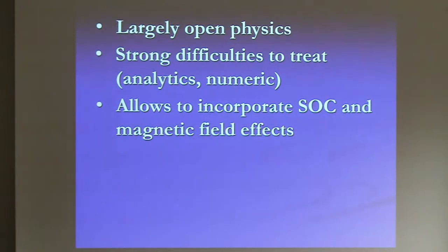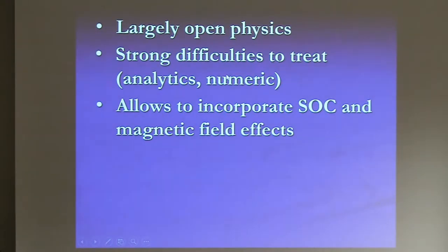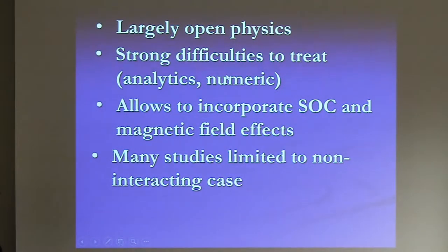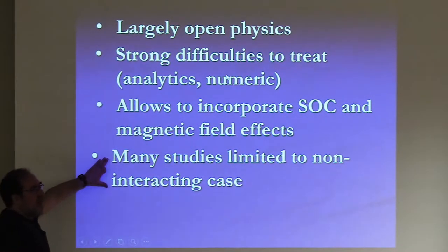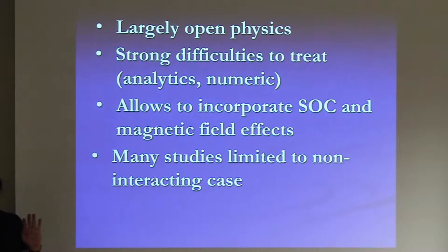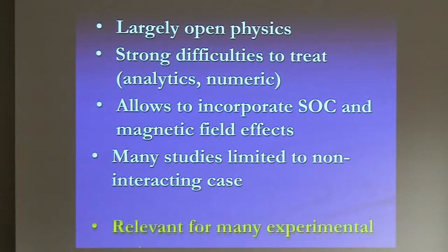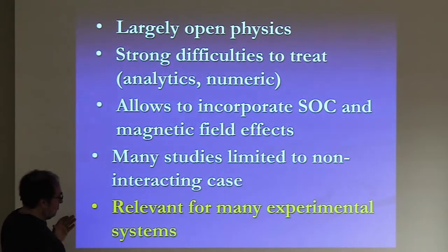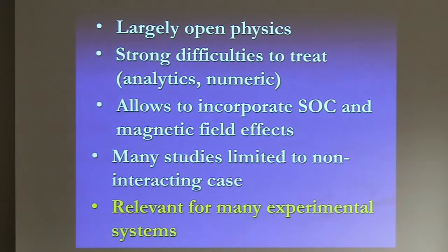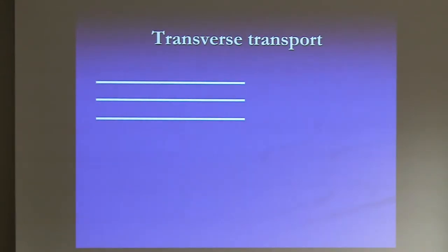This is largely open physics and very difficult to treat — you lose the analytics and numerics, and you're stuck. You also have to worry about spin-orbit coupling and magnetic field effects. Most studies so far have been done without interactions — it's much easier to diagonalize a 2×2 matrix than a 2^N × 2^N matrix when N is 10^23. But if you want to deal with many experimental systems, you have to worry about interactions. Let me flash a couple of issues: what is the transverse transport?